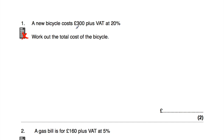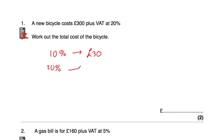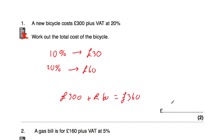Question one: a new bicycle costs £300 plus VAT at 20%. Work out the total cost of the bicycle. The VAT is 20%, so we need to work out 20% of £300. First, 10% of £300 is £30 (divide by 10). Doubling gives 20% = £60. So £300 plus £60 means the total cost of the bicycle, including VAT, is £360.